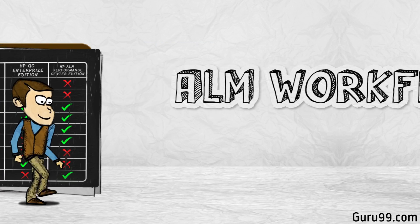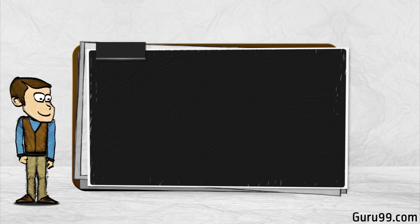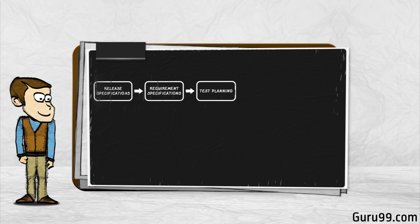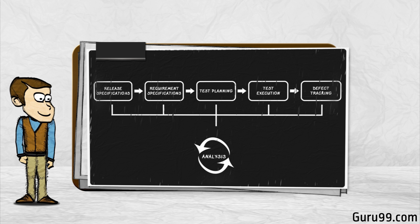ALM Workflow. To learn the ALM Workflow, let's first study a typical test process. We begin with planning and drafting release details — determining the number of cycles in each release and the scope of each release. For a given release and cycle, we draft the requirements specifications. Based on the requirements, test plans and test cases are created. The next stage is executing the created test plan, followed by tracking and fixing the defects detected in the execution stage. During all stages, analysis is done and reports and graphs are generated for test metric generation.